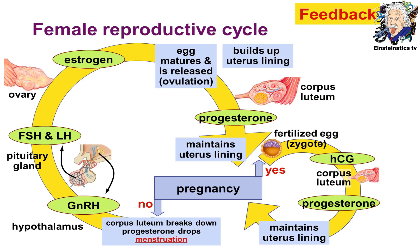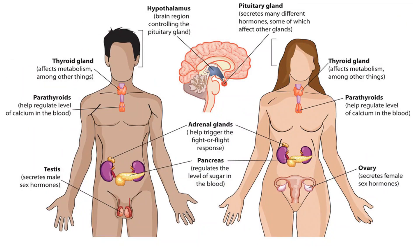The female sex gland, the ovary, is similarly controlled through the hypothalamus releasing GnRH. The pituitary gland then releases FSH and LH, which stimulate the production of estrogen and progesterone. These hormones have various functions and signal different developmental changes throughout the female body.